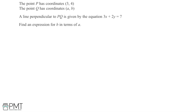In this question we're told that the point P has coordinates 3, 4 and that the point Q has coordinates A, B. We're then told that a line which is perpendicular to PQ is given by the equation 3x plus 2y is equal to 7, and we're asked to find an expression for B in terms of A using all of this information.